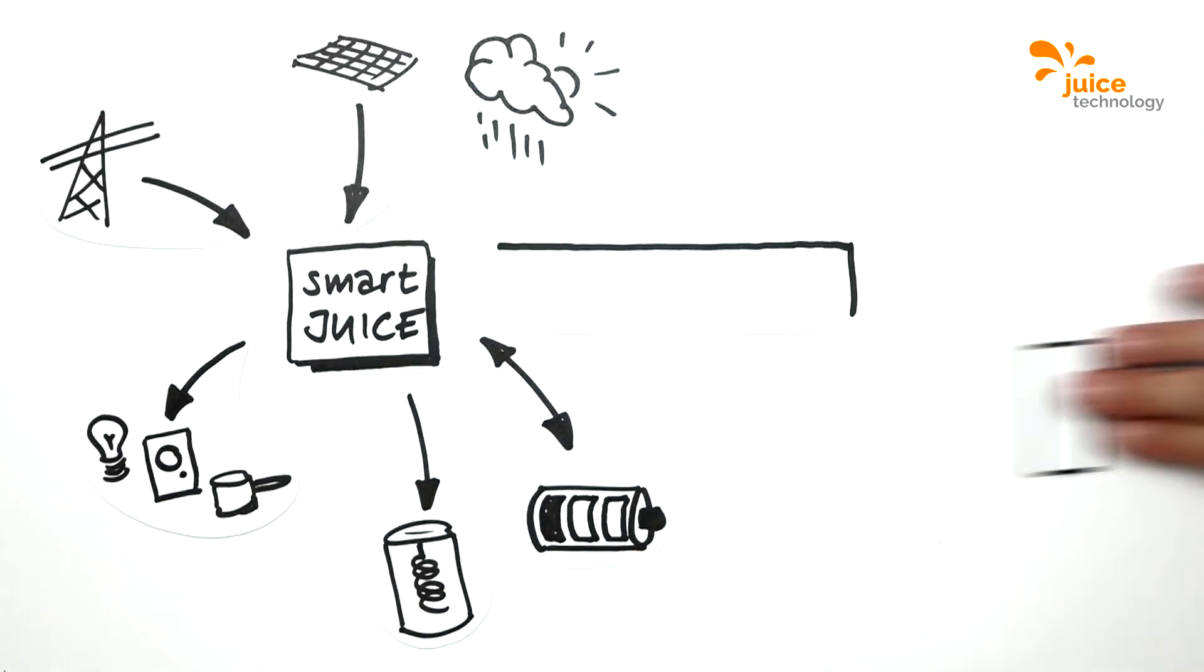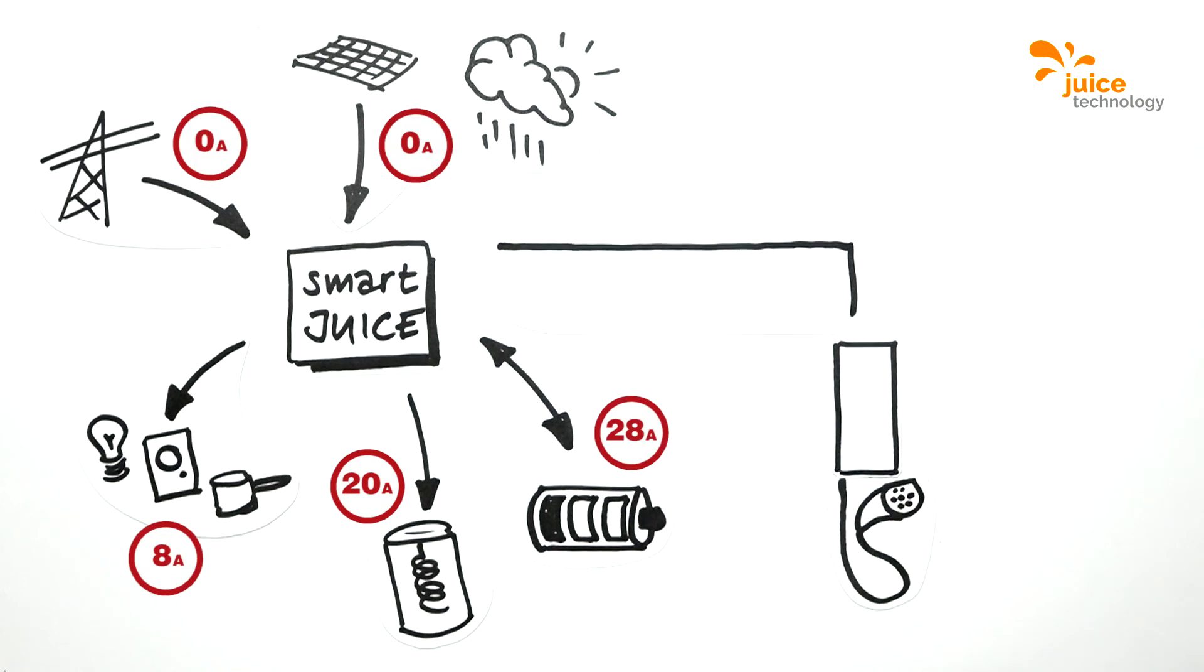Going back to our example, you are out and Smart Juice gives the power consumption of the boiler and household appliances priority via your own internal battery. The output is easily sufficient for the low consumption.